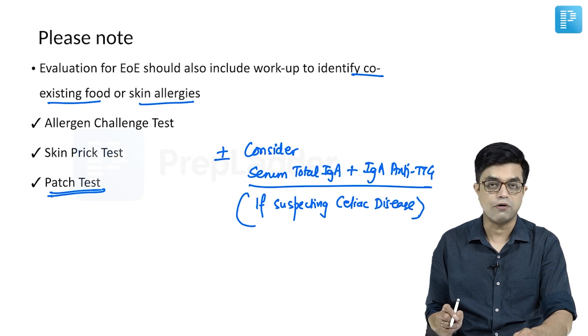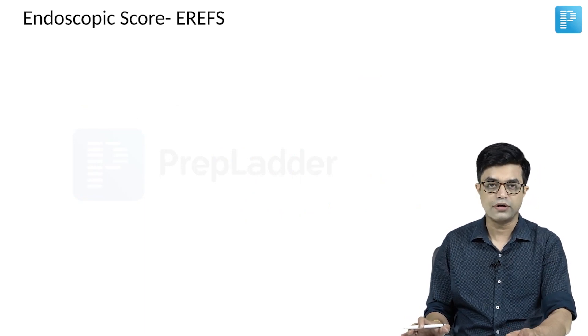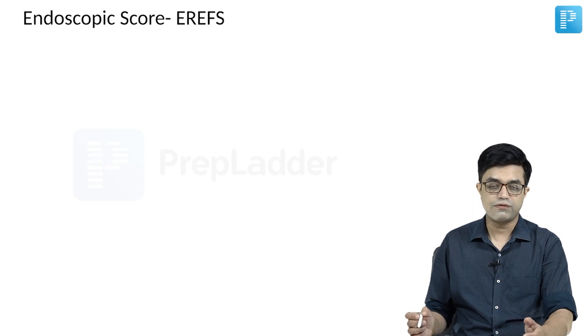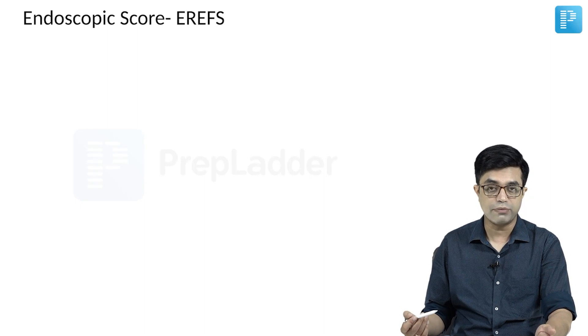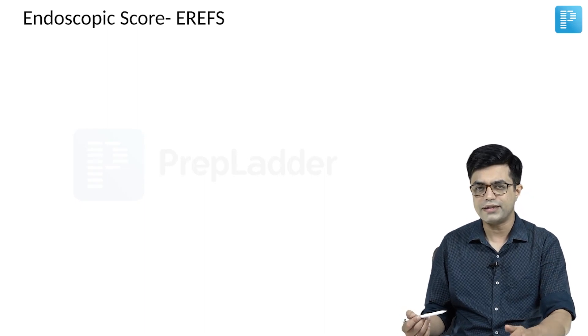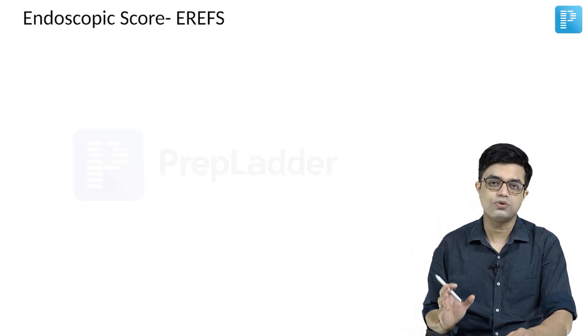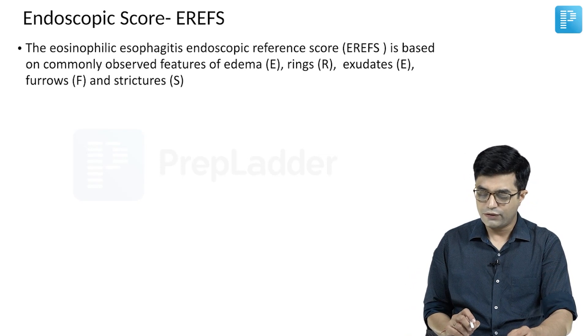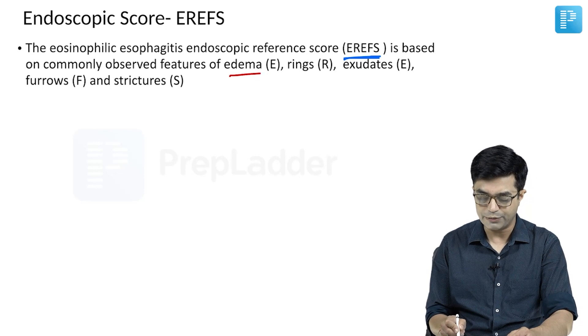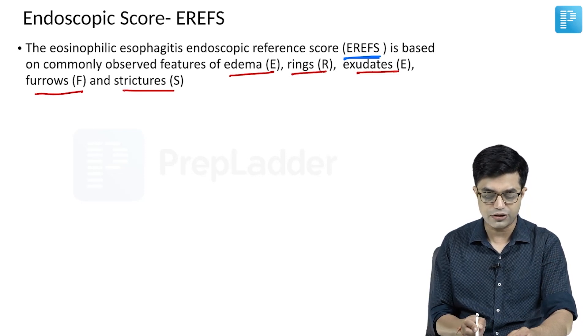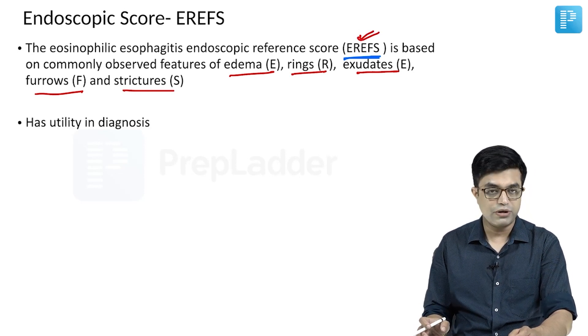The endoscopic score is useful for measuring activity and degree of endoscopic involvement in eosinophilic esophagitis. It has good role in diagnosing and monitoring response to therapy. The eosinophilic esophagitis endoscopic reference score is based on edema, rings, exudates, furrows, and strictures.